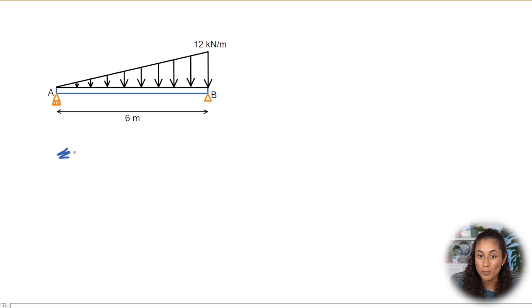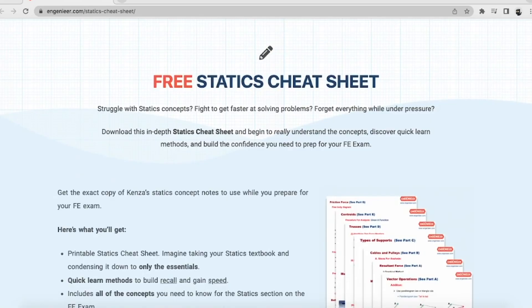Let's set up our moment equation. We're going to do the summation of the moment at B equals zero. Now remember, here we have a pin, that's why the moment here is going to be zero. If you want to review the statics concepts, make sure to download the cheat sheet here.